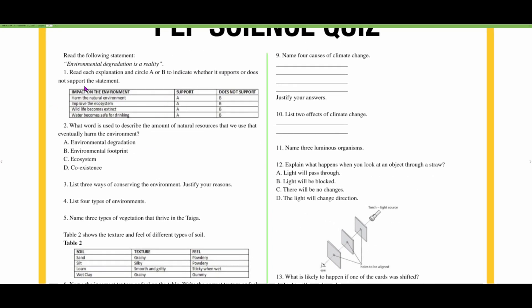Here we have a table with columns that go vertically and rows that go horizontally. It says impact on the environment: support or not support. Harm the natural environment would definitely support environmental degradation. Improve the ecosystem does not support. Wildlife becomes extinct supports it.